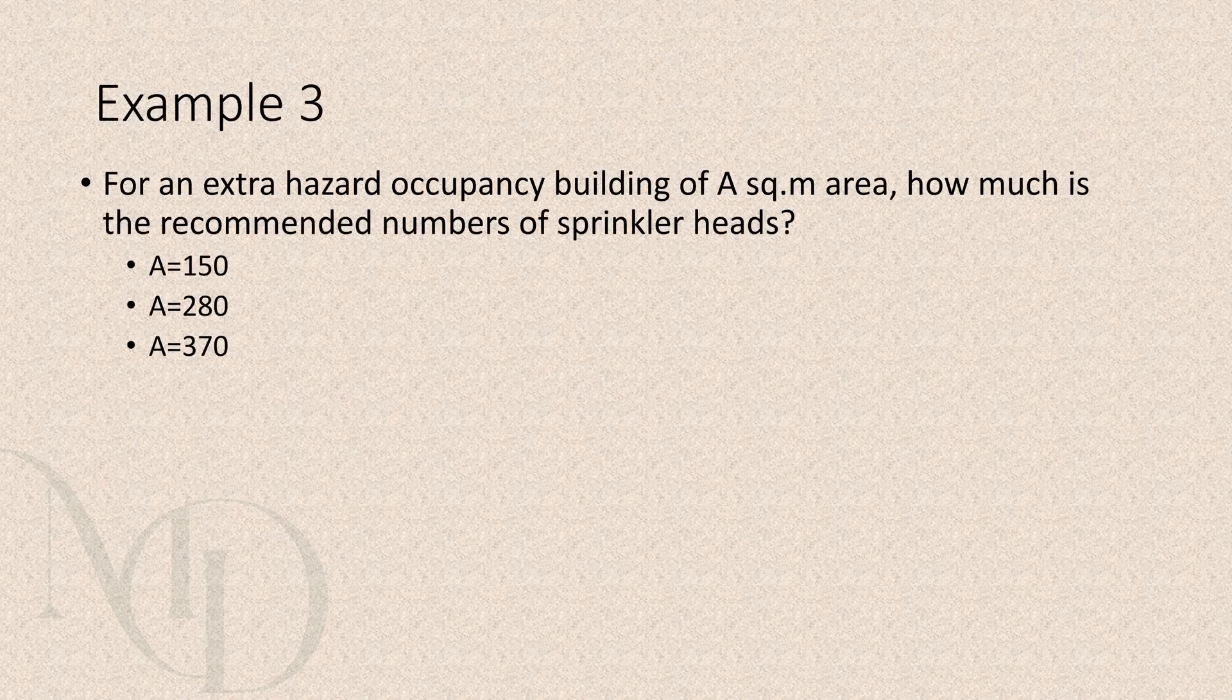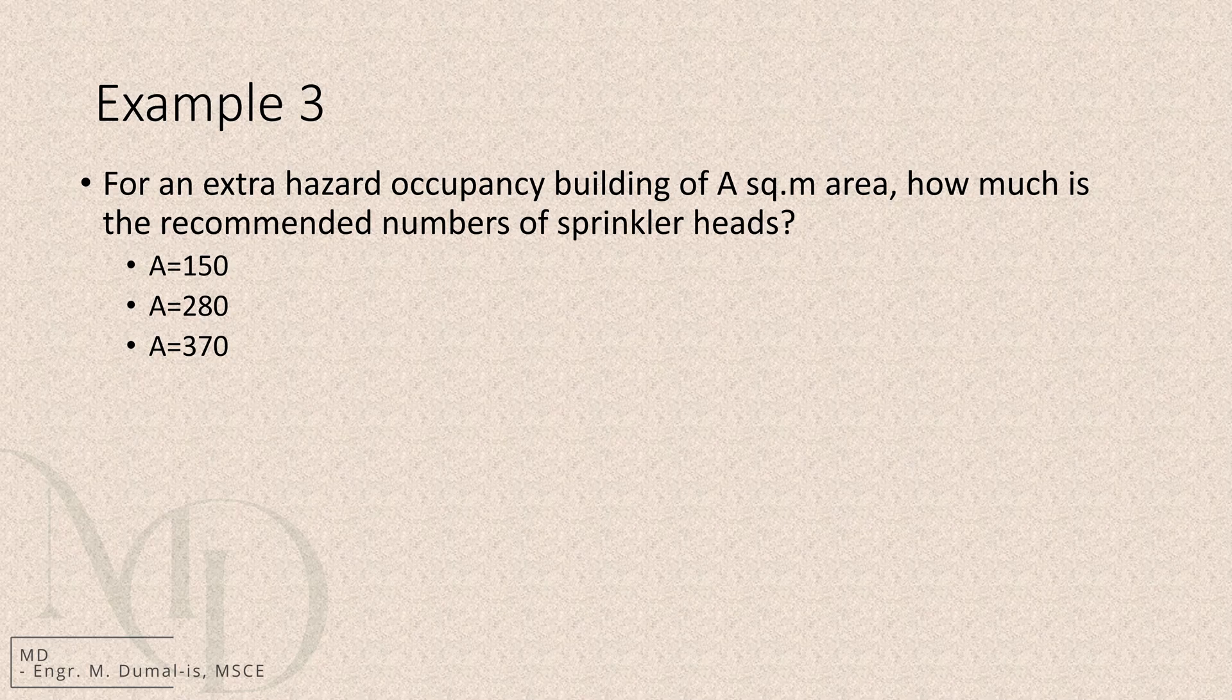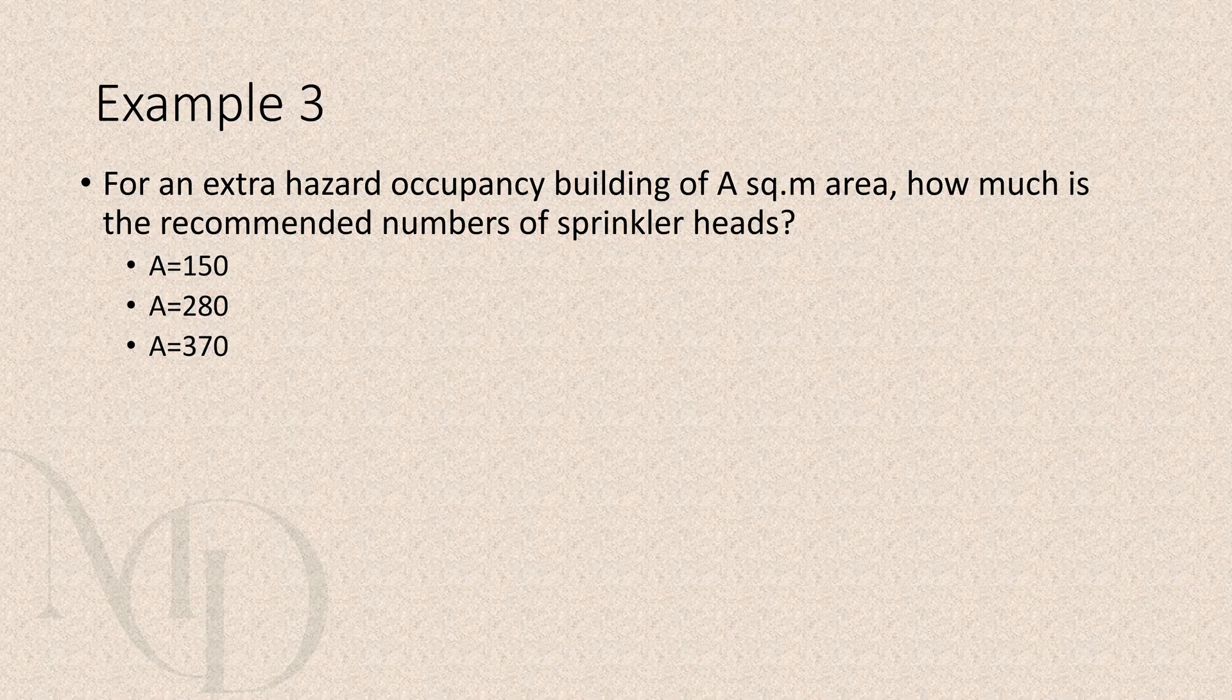So here is the last problem. For an extra hazard occupancy building, determine the recommended number of sprinkler heads for an area represented by capital A. First case, area is 150 square meters. Next is 280 square meters. And the last one is 370 square meters.